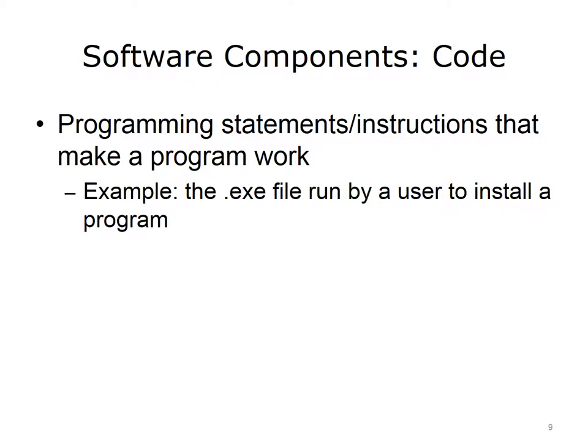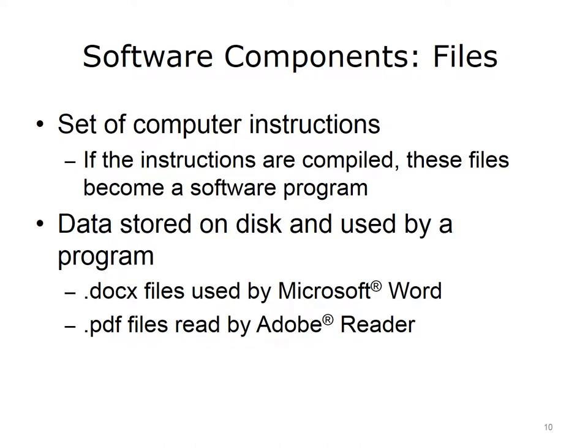The basis of all application software is code. Code contains the programming statements or instructions that make a program work. Files are a second software component. Files are either sets of compiled computer instructions or sets of data that may be created, retrieved and used by software. When we talk about files that are sets of compiled computer instructions, we're talking about software programs such as Microsoft Word or Adobe Reader. When we talk about files that are sets of data that may be created, retrieved and used by software, we're talking about things such as a .docx file created using Microsoft Word or a PDF formatted file that can be opened and read using Adobe Reader.